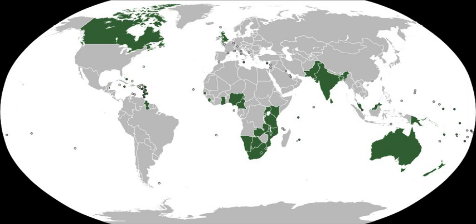In the Balfour Declaration at the 1926 Imperial Conference, Britain and its Dominions agreed they were 'equal in status, in no way subordinate one to another in any aspect of their domestic or external affairs, though united by common allegiance to the Crown, and freely associated as members of the British Commonwealth of Nations.' The term 'Commonwealth' was officially adopted to describe the community. These aspects were formalised by the Statute of Westminster in 1931, which applied to Canada without ratification, but Australia, New Zealand, and Newfoundland had to ratify the statute for it to take effect.